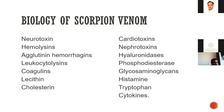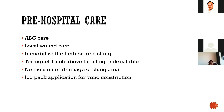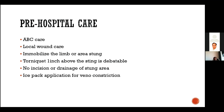The neurotoxins are the most lethal and dangerous toxins in scorpion venom. The mechanism of envenomation involves massive release of endogenous catecholamines into the circulation due to delayed activation of sodium neuronal channels by the venom. The main molecular targets of scorpion neurotoxins are voltage-gated sodium channels and potassium channels, including calcium-activated potassium channels. We'll focus purely on pre-hospital care and emergency department care of scorpion poisoning.